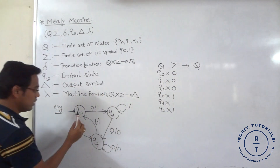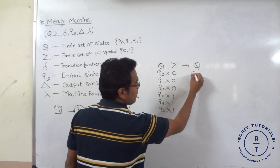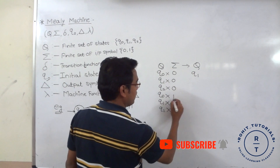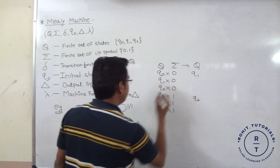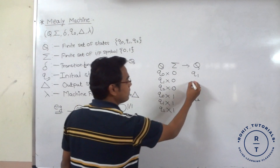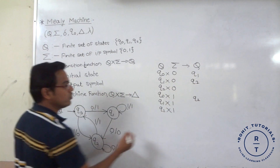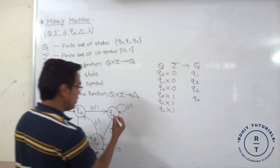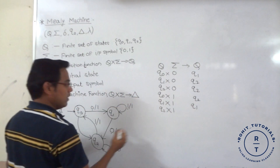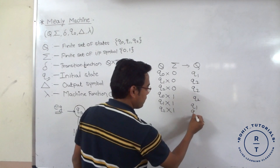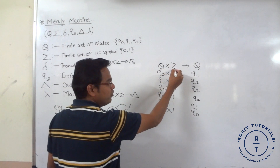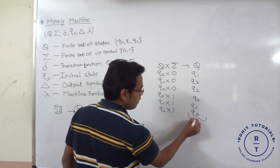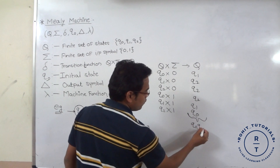For example, Q0 input 1 is offered, it goes to Q2. Q1 input 0 is offered, it goes to Q2. Q2 input 0 is offered, it goes to Q2. So whenever at any state any input symbol occurs, it goes to the next state. These states are from Q0, Q1, or Q2.